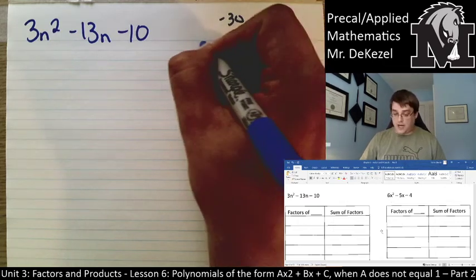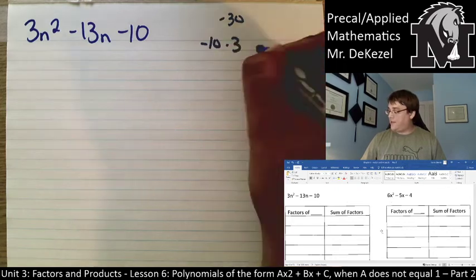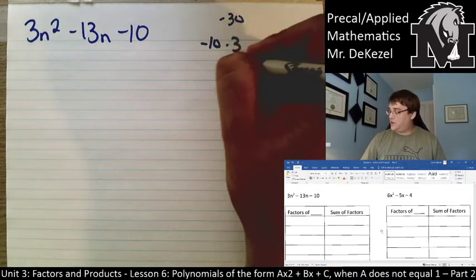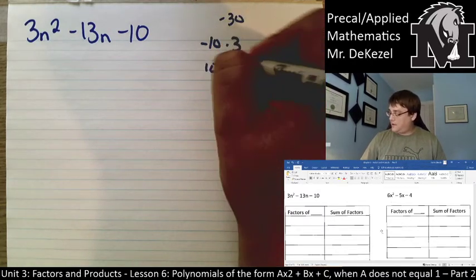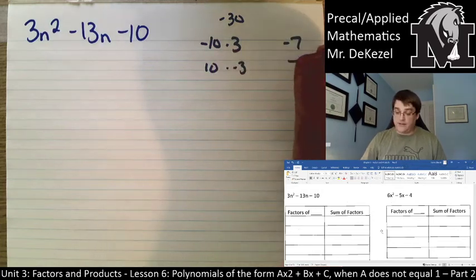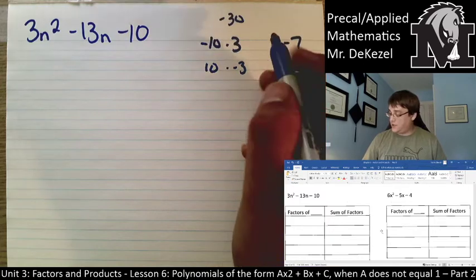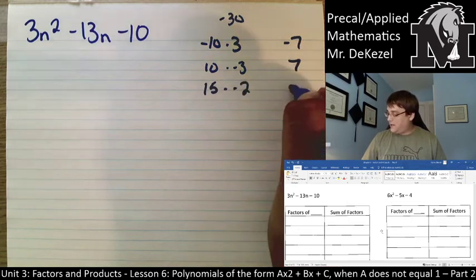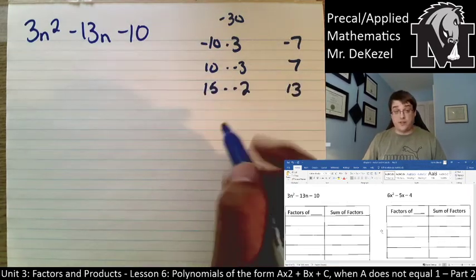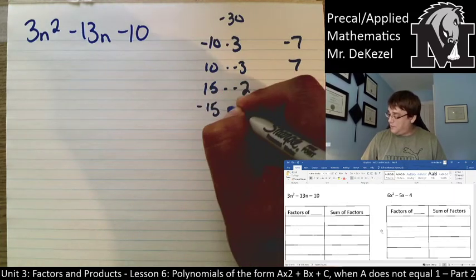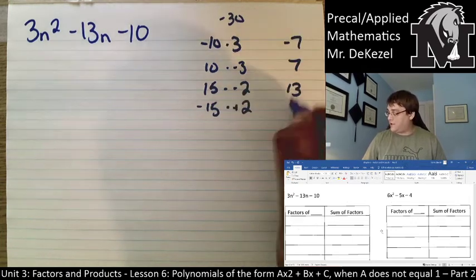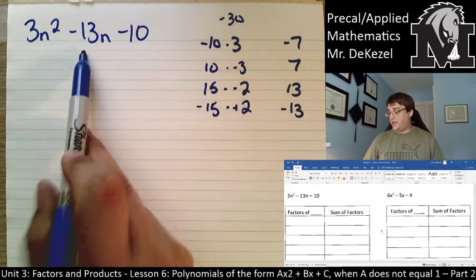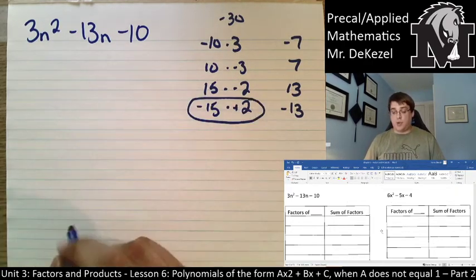We could do minus 10 times 3. And if we add those together, the sum would be minus 7. So, not quite. We could do 10 and minus 3. That would be 7. So, it's not quite right there. What else could we do to multiply to 30? We could do 15 and negative 2. That would get us 13. So, we're getting close. I just want negative 13. So, I'm going to do negative 15 and multiply it by positive 2. That would get me negative 30. And that would get me negative 13.